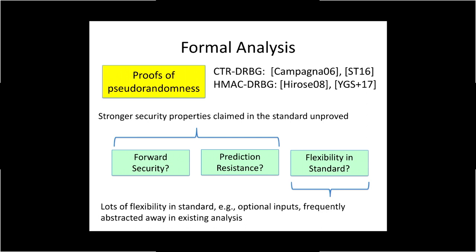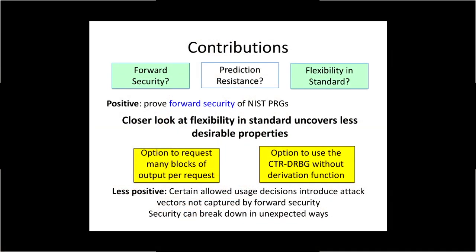At the same time, there's a lot of flexibility in the standard in terms of optional inputs and implementation choices, and these flexibilities are often abstracted away in existing analysis. In this work, we aim to address these gaps on two fronts. As an initial positive result, we prove the forward security of each of the NIST PRGs. But then we find that taking a closer look at flexibility in the standard, the standard allows the PRGs to be used in ways which introduce attack vectors not covered by forward security, and security can break down in unexpected ways.